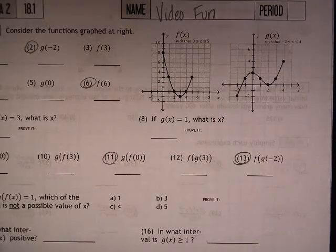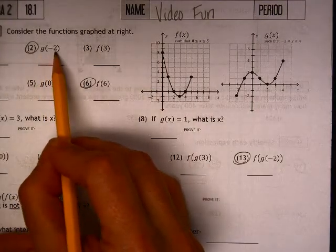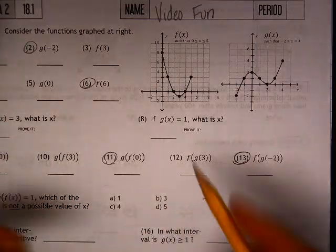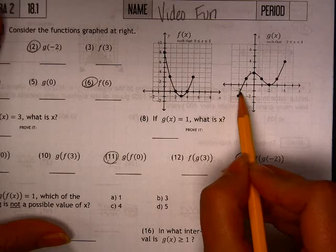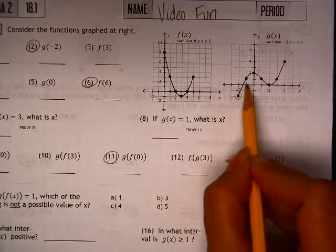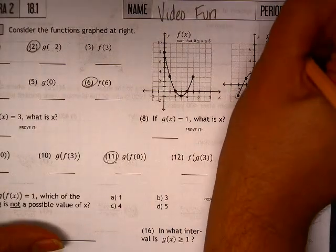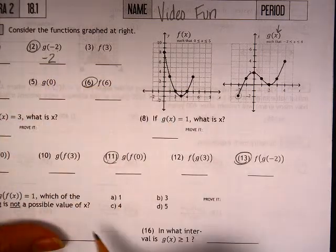We've got some graphs here that we're trying to utilize. This one asks, what is g of negative 2? In other words, g is like the y, and negative 2 is our x value. When we plug in negative 2 for the x value—remember this is g of x—you actually get negative 2 for the y value.